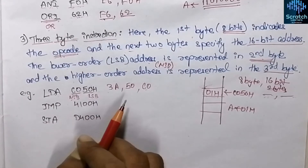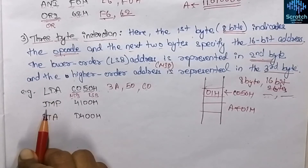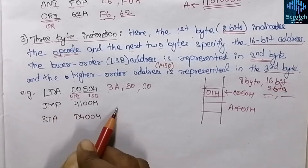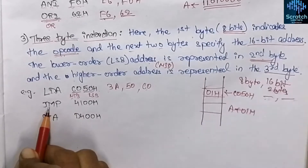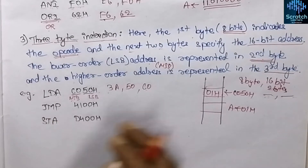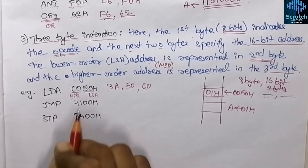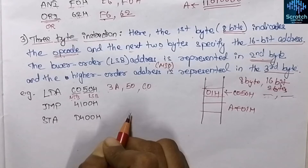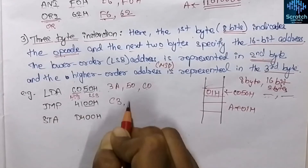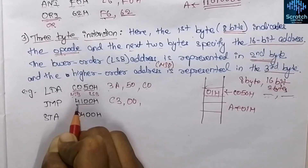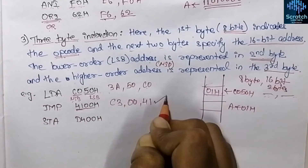The next is the JMP instruction — unconditional jump, already discussed while covering branch control instructions. On execution, the program counter jumps from a specific location to address 4100 hex. The three bytes required: the first byte is the hex code C3 hex, the second byte is the LSB which is 00 hex, and the third byte is the MSB which is 41 hex. So JMP is also a three byte instruction.